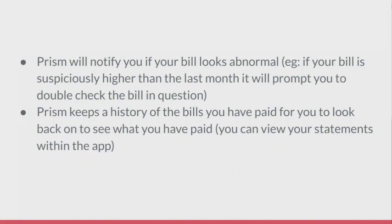Prism will notify you if your bill looks abnormal. For example, if your bill is suspiciously higher than the last month, it will prompt you to double check the bill in question. Prism also keeps a history of all the bills you have paid, for you to look back on and see what you have paid. You can view your statements within the app.